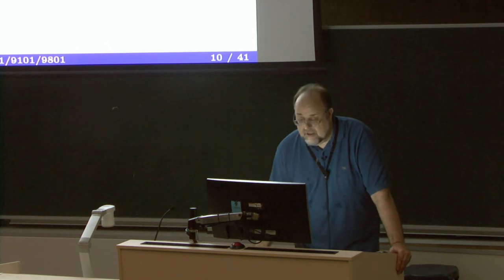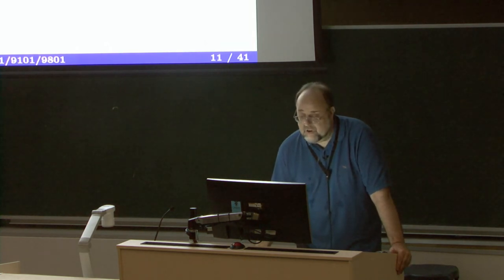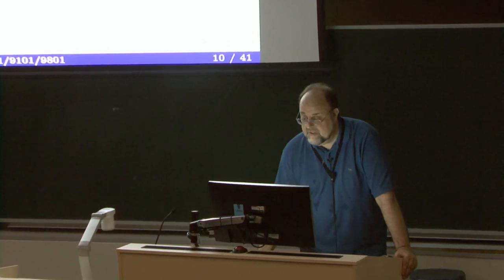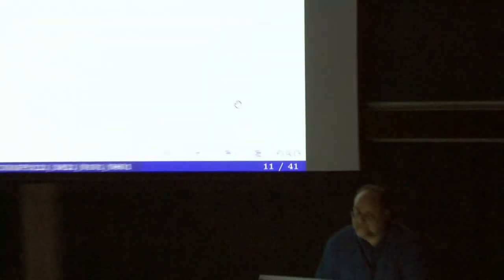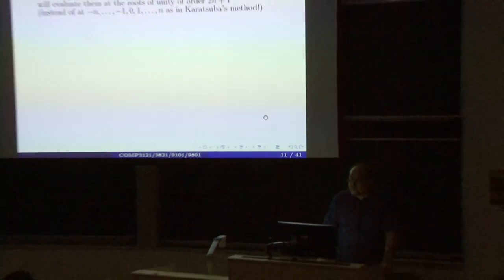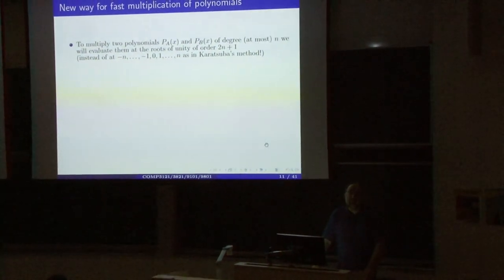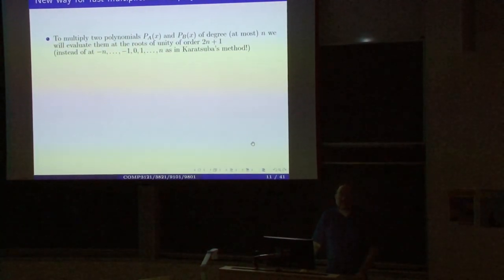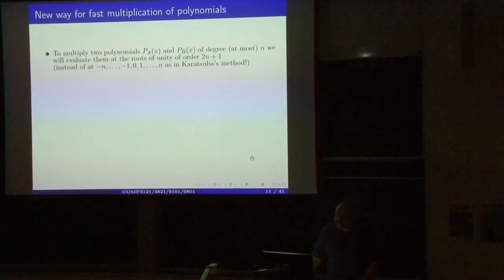This way you will never forget what the DFT is: given the sequence, write the corresponding polynomial, then substitute the variable with all roots of unity of the appropriate order. The sequence of values is what's called the Discrete Fourier Transform. Rather than memorizing an ugly formula — as textbooks often present it — you can derive everything from fundamental principles.